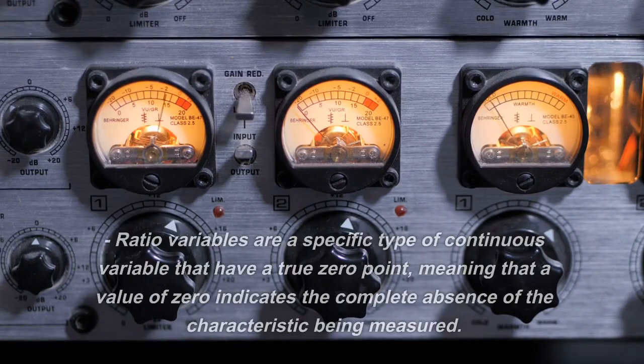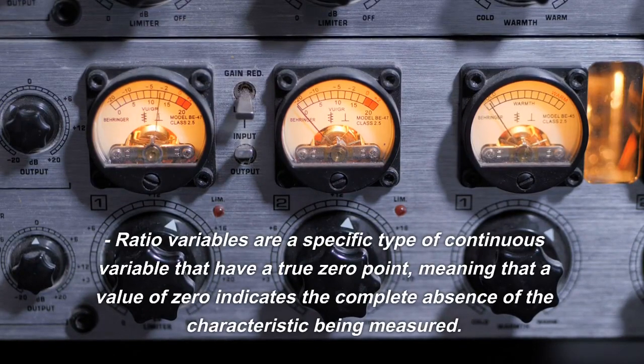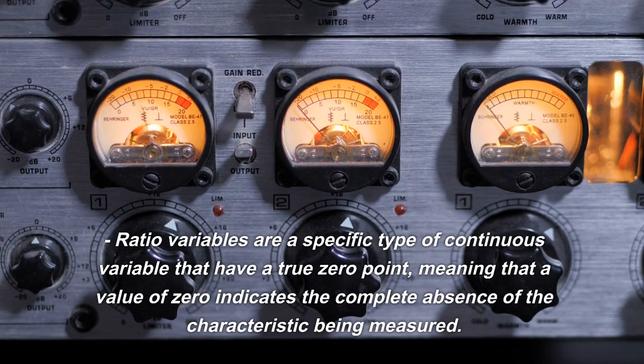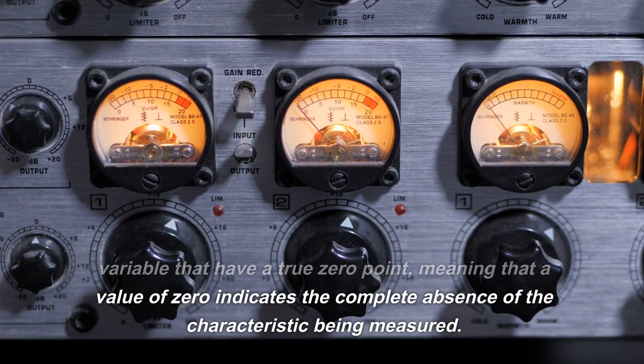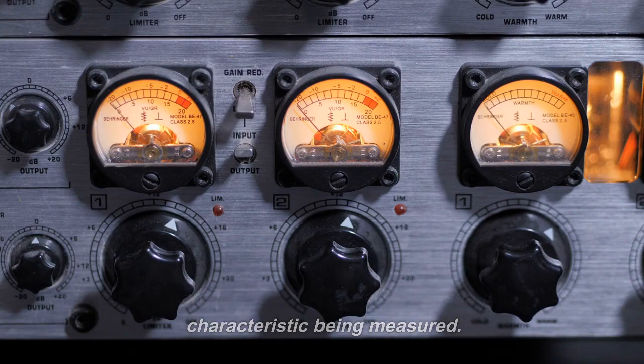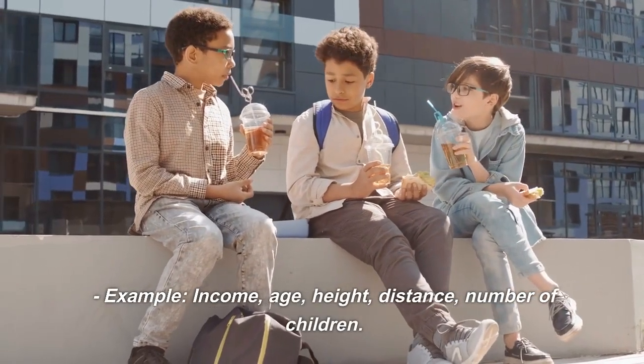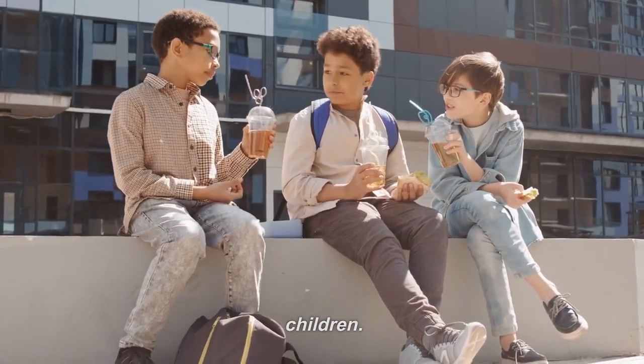Ratio variable. Ratio variables are a specific type of continuous variable that have a true zero point, meaning that a value of zero indicates the complete absence of the characteristic being measured. Example: Income, age, height, distance, number of children.